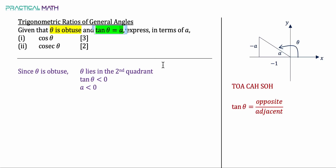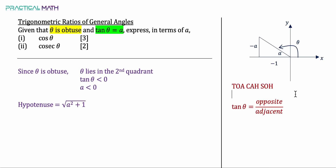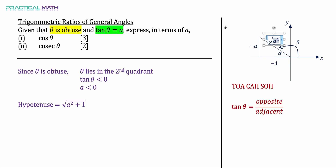Now that we have the opposite and adjacent sides, we use the Pythagorean theorem: A squared plus 1 squared equals the hypotenuse squared. Therefore, the hypotenuse equals the square root of A squared plus 1. Let's label all three sides on the diagram: opposite is negative A, adjacent is negative 1, and hypotenuse is the square root of A squared plus 1.